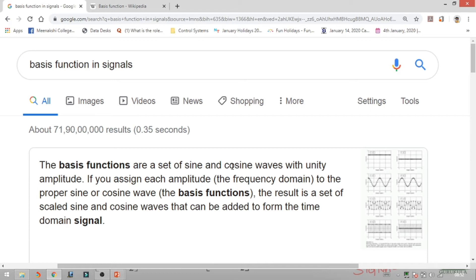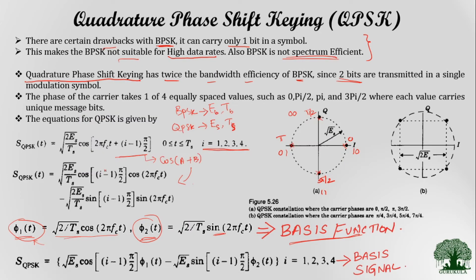Basis functions are a set of sine and cosine waves with unity amplitude. Here we have the sine component and the cosine component with unity amplitude — these are what we call basis functions. We can rewrite the QPSK signal as a linear combination: s_QPSK equals the cosine coefficient multiplied by φ₁(t) plus the sine coefficient multiplied by φ₂(t), where i takes values 1, 2, 3, and 4. This equation is called the basis signal, since it is generated from the basis functions.